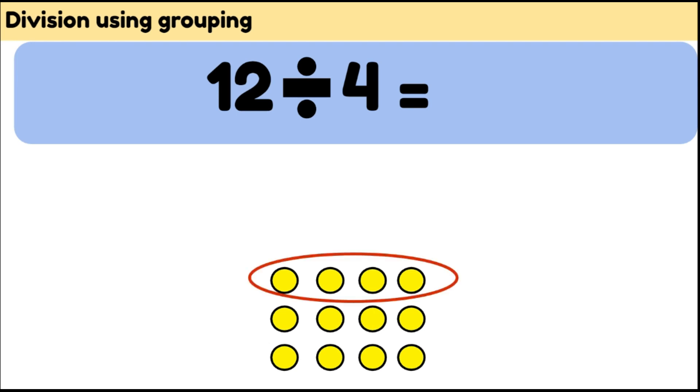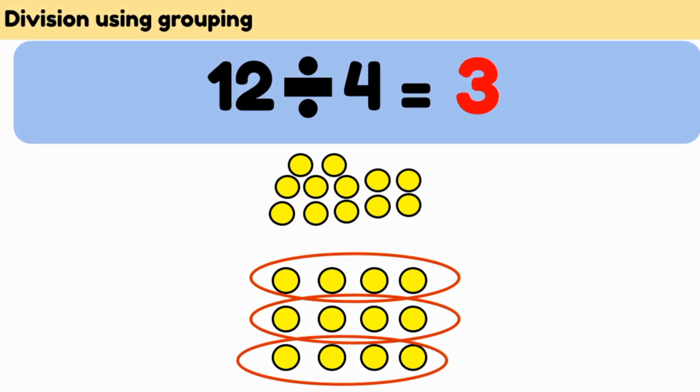1 group of 4, 2 groups of 4, 3 groups of 4. So we have 1, 2, 3 groups, so our answer is 3. We can group 12 into 3 groups of 4.